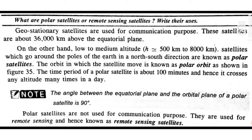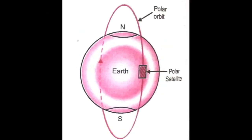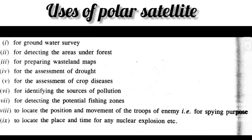Sometimes polar satellites are also called remote sensing satellites. Polar satellites are not used for communication purposes — they are used for remote sensing, and hence are known as remote sensing satellites. So polar satellites are essentially remote sensing satellites, revolving in a polar orbit.